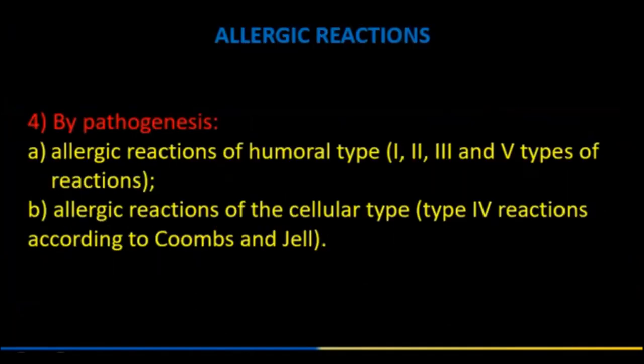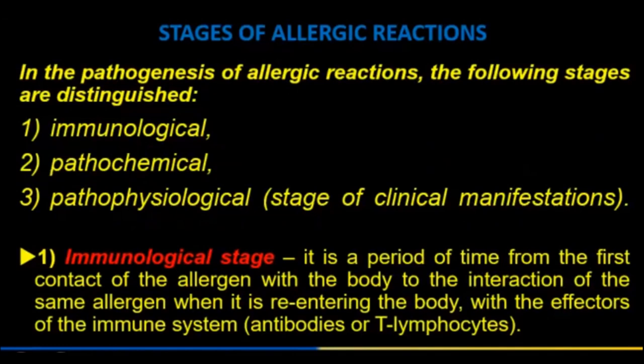Allergic reactions by pathogenesis include humoral type reactions (Types I–III, V according to Coombs and Gell) and cellular type reactions (Type IV). The stages of an allergic reaction in its pathogenesis are: immunological stage, pathochemical stage, pathophysiological stage, and the pathophysiological stage of clinical manifestation.